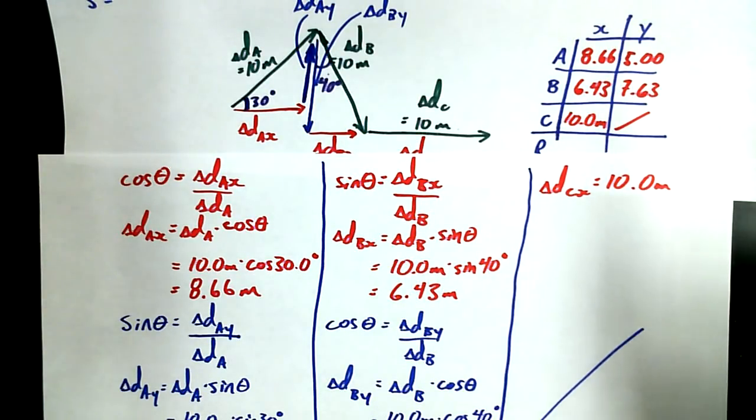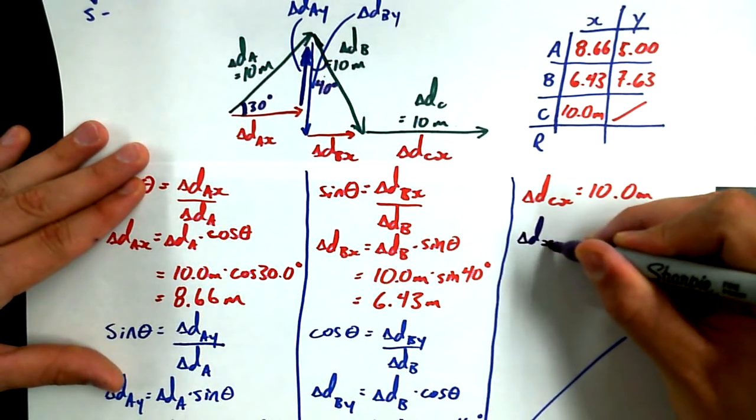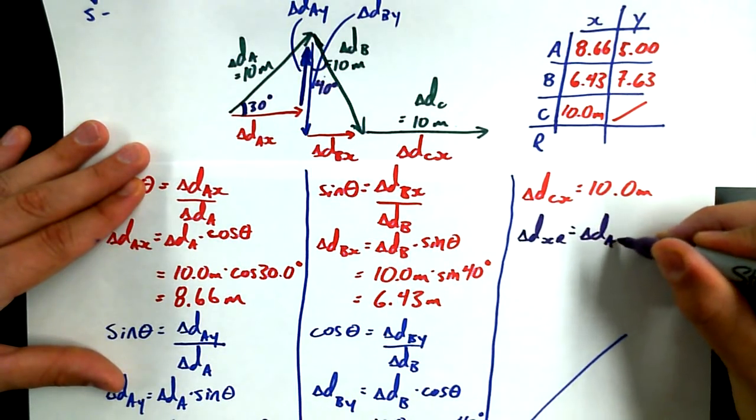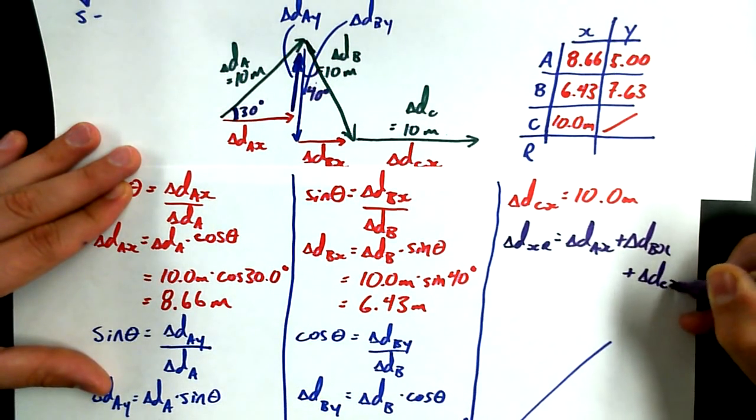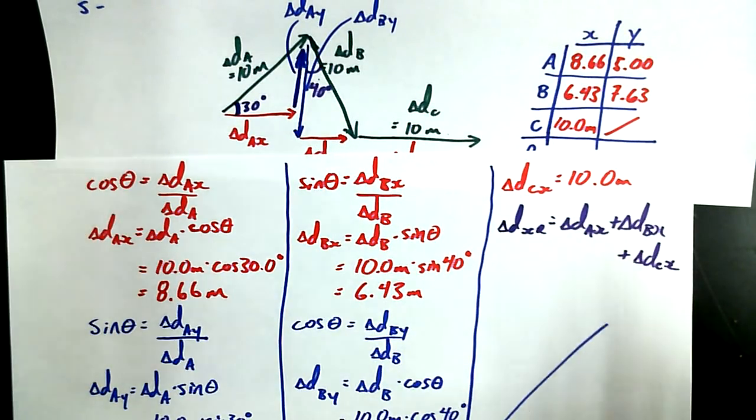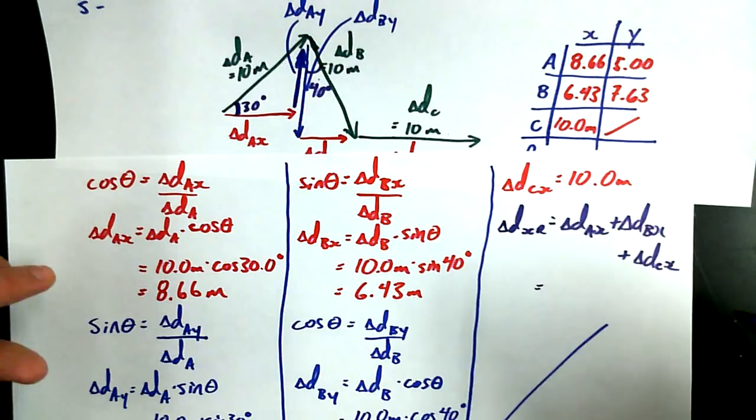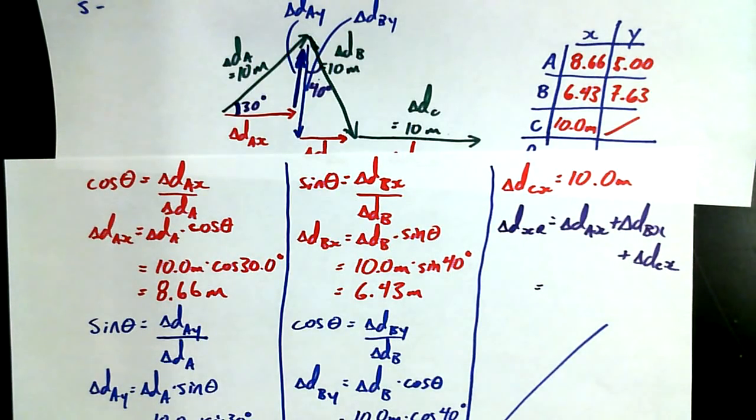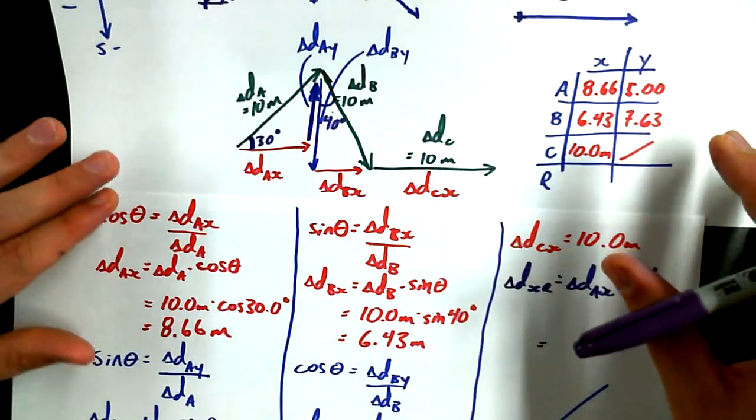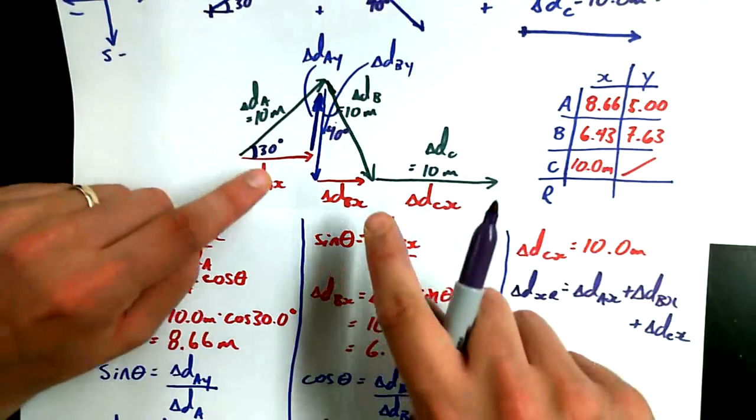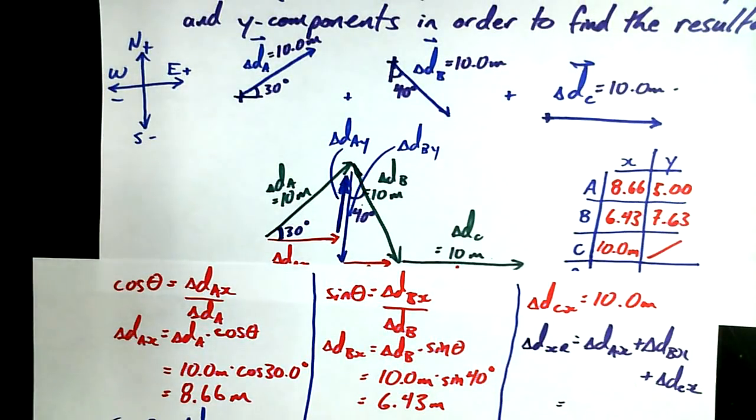Now, somebody will say, well, when I add all these guys up to find the resultant x value and the resultant y value, aren't you saying delta dax resultant is delta dax plus delta dbx plus delta dcx? Yes, you are. And that's what you really should write down. We're just doing some bookkeeping here to make sure that we have everything that we need. Now, if I add up delta dax plus delta dbx plus delta dcx, I have to consider which values are positive and which ones are negative. Let's go back to our picture. Tell me about these x components. Are any of them negative according to our reference frame of north, south, east, and west? Yes, ma'am. B.